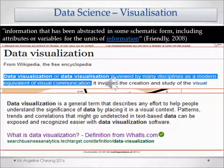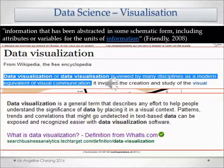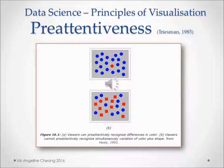Your learning thus far should help you make sense of these definitions of data visualization: that it is information abstracted in some schematic form, including attributes or variables for units of information, and that data visualization is viewed by many disciplines as the modern equivalent of visual communication. It is a general term describing any effort to help people understand the significance of data by placing it in a visual context. Patterns, trends, and correlations that might go undetected in text-based data can be exposed and recognized more easily with data visualization software.